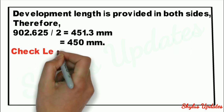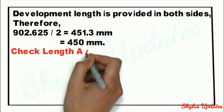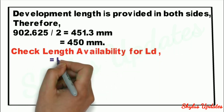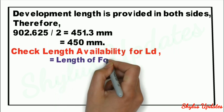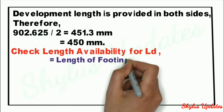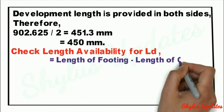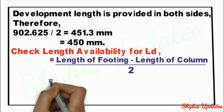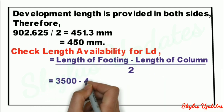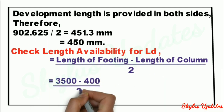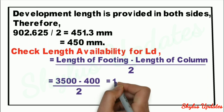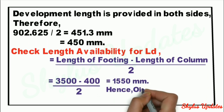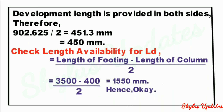Now check the length availability for development length LD. The formula is (length of footing − length of column) / 2. Substituting the values, we get 1550 mm, which is sufficient and hence it is okay.